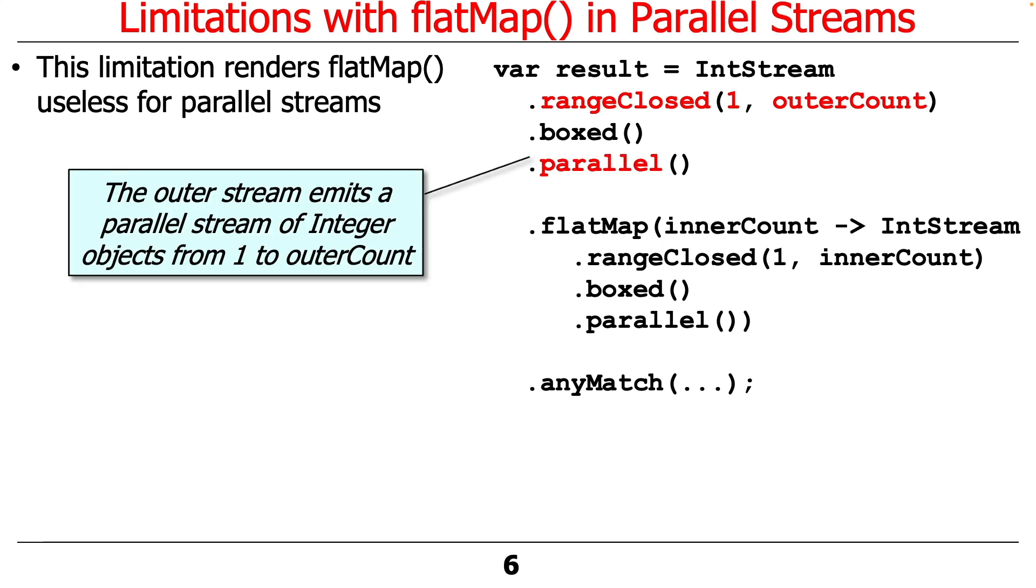So here's a simple example. We have this outer stream that's trying to emit a stream of Integer objects from 1 to outerCount, whatever outerCount is. Let's say it's 1 to 10 or 1 to 1000 or 1 to 10,000.